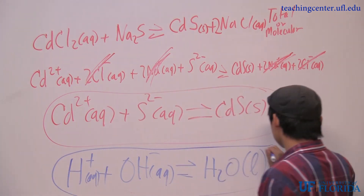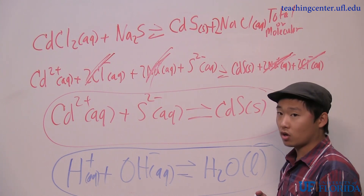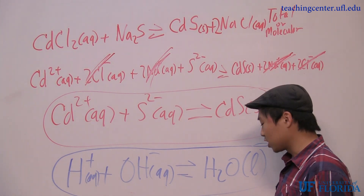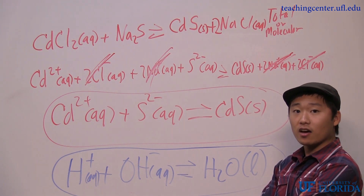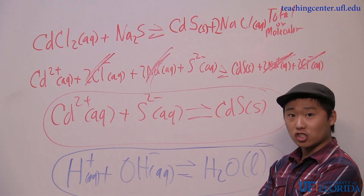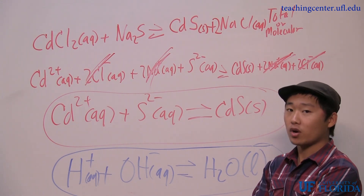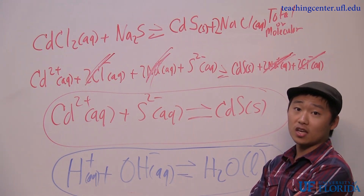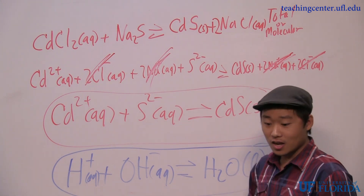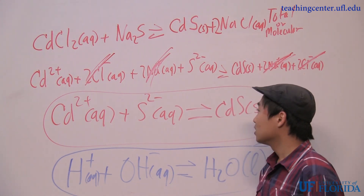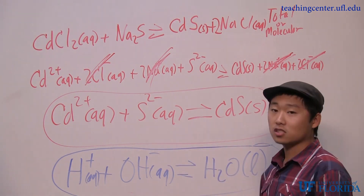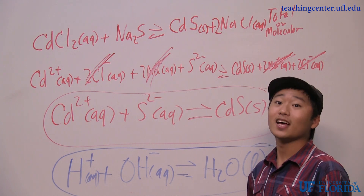If any of you were confused about what happens when you make a liquid or gas on the product side — just remember, every time you have a net ionic equation, there is a reaction occurring if you make either a solid, liquid, or gas. So back to our answer: Cd²⁺ + S²⁻ forms CdS. And that's your answer.